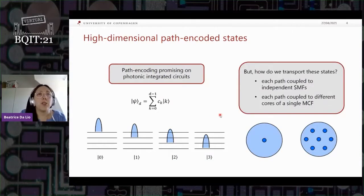Then the question is, this is super nice if we want to stay on our photonic integrated circuits, but what if we want to just communicate? We want to use these states to do a quantum communication protocol. One way we can think about transporting these states is to couple each one of these modes to a different single mode fiber, which is shown here on the left. Or we could also try to exploit this different kind of fiber which is called multicore fiber, shown here on the right, where basically on the same cladding area we have several different cores. So we could think of coupling each one of these modes to a different core in our multicore fiber.